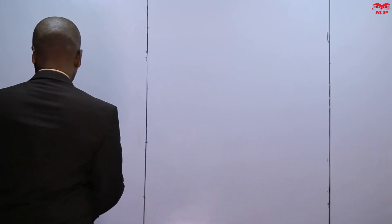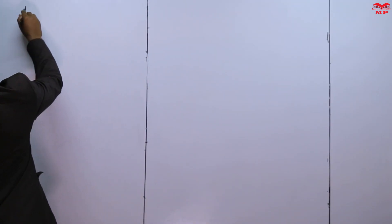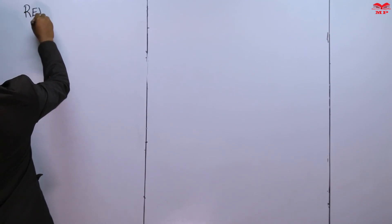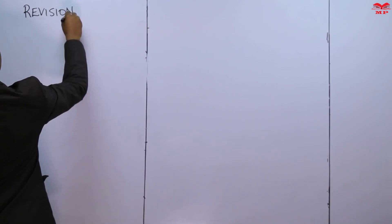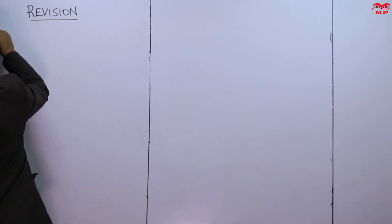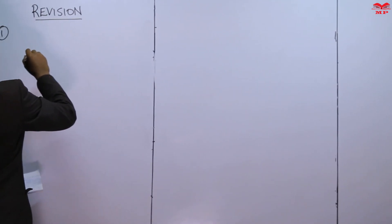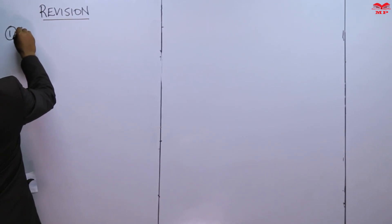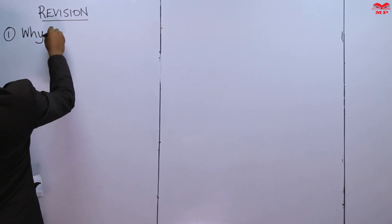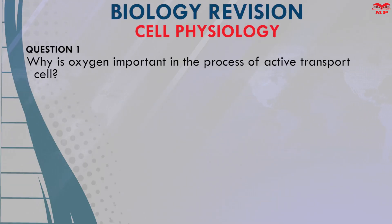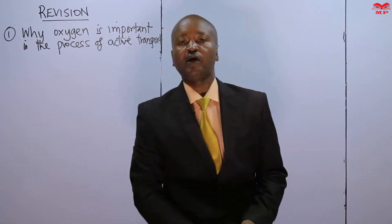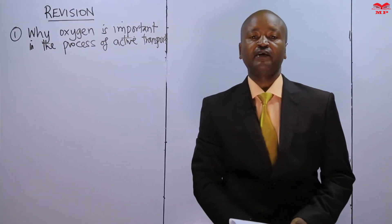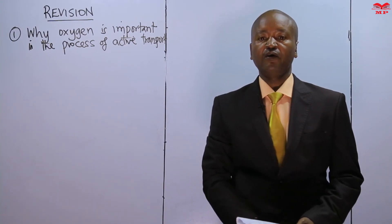We start with question one from our revision questions. In question one, the learner is being asked why oxygen is important in the process of active transport. This question requires that the learner should have knowledge about active transport.